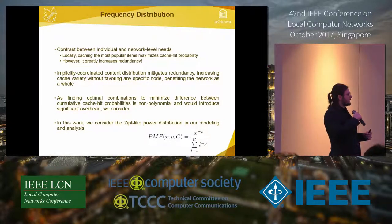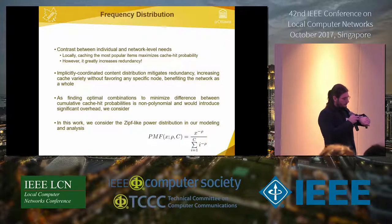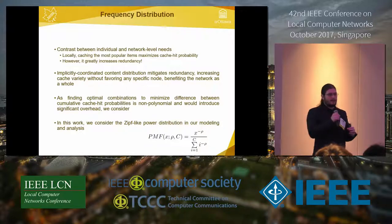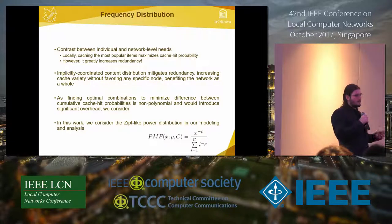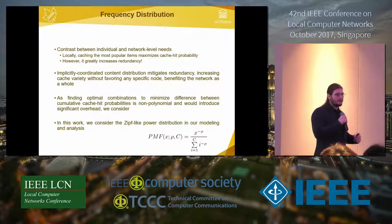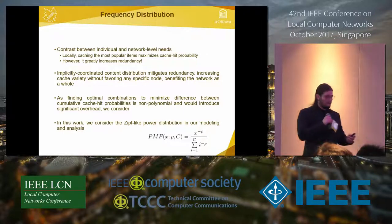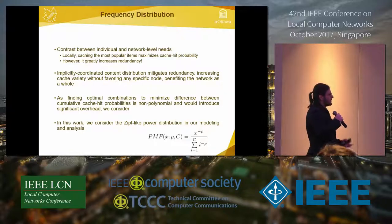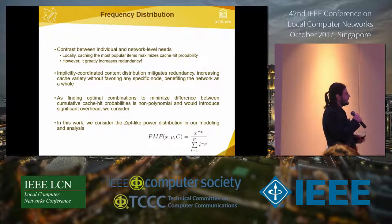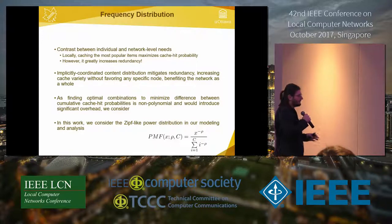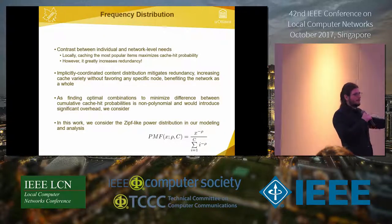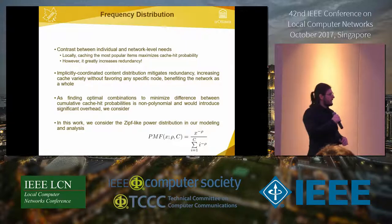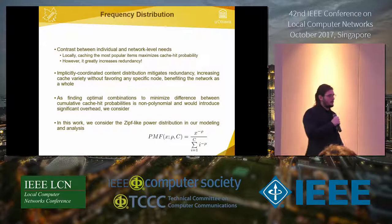There is a disparity between what a node wants locally and what is best for the network. Caching highest-frequency items at every node gives a high local hit chance but very low cache diversity — less popular objects require traversing a very long path. Implicitly coordinated cache distribution based on popularity mitigates this, increasing cache variety without favoring a specific node. Each node uses personal knowledge combined with information relative to the network's communication as a whole, trying to reduce average hop count to content.